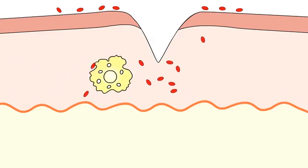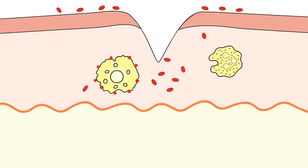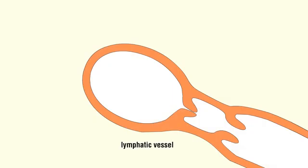Phagocytic cells in the tissues, such as macrophages and neutrophils, engulf the pathogen. Dendritic cells are also phagocytic and are activated by binding pathogens to leave the site of infection and migrate to a lymph node.